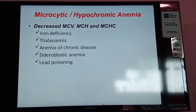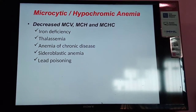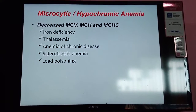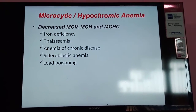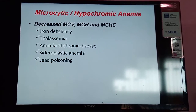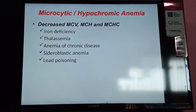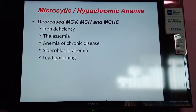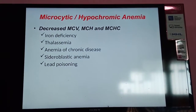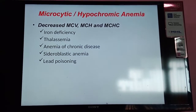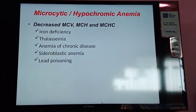MCV is mean corpuscular volume; normal range is 80–100 femtoliters. MCH is mean corpuscular hemoglobin; normal range is 26–30 picograms. MCHC is mean corpuscular hemoglobin concentration; normal value is 31–37 g/dL. In microcytic hypochromic anemia, MCV, MCH, and MCHC are all decreased. This type is commonly seen in iron deficiency anemia, thalassemia, anemia of chronic disease, sideroblastic anemia, and lead poisoning.